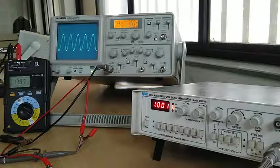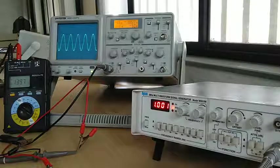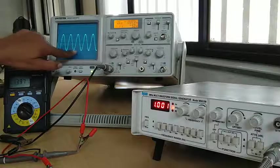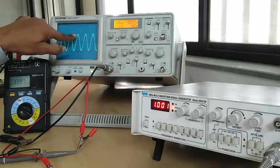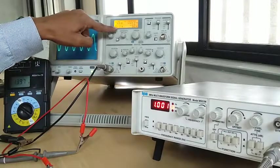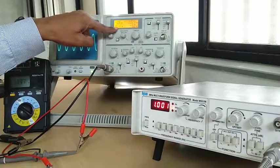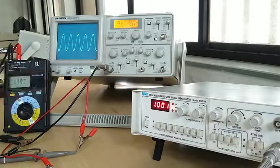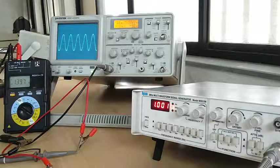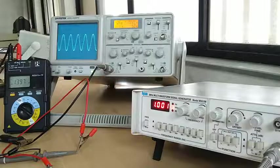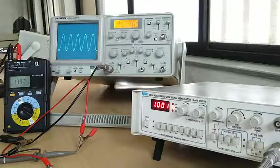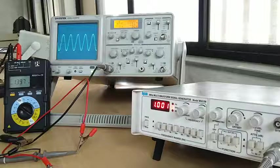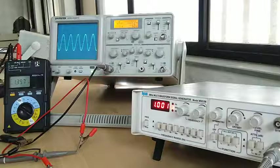Now, to calculate the peak-to-peak voltage, I multiply the number of divisions, which is 3.8, by the volts per division setting, which is 1 volt per division. This equals 3.8 volts. So from the oscilloscope, I have read the peak-to-peak voltage value as 3.8 volts.